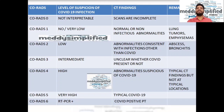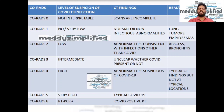CORADS 2 means the level of suspicion of COVID-19 is low. Abnormalities are present consistent with an infection, but this infection is not COVID-19 — it is something else, like an abscess or bronchitis, which are infections but not associated with COVID. So the suspicion of COVID-19 infection is low.